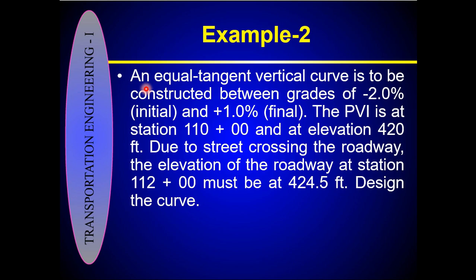Let's start the example. An equal tangent vertical curve is to be constructed between the grades of minus 2% and 1%. The PVI is at station 1110 and at elevation 420 feet. Due to a street crossing the roadway, the elevation of the roadway at station 1112 must be at 424.5 feet. Design the curve.